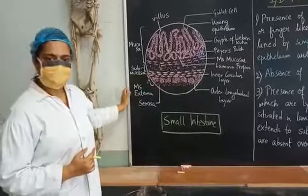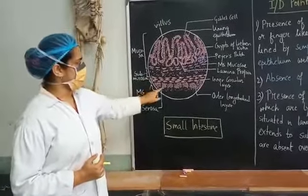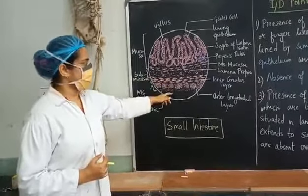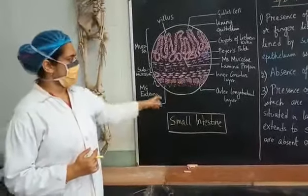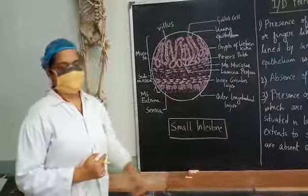Submucosa is just like that of duodenum. Like duodenum it has the inner circular and outer longitudinal muscle layers. The last layer is the serosa.